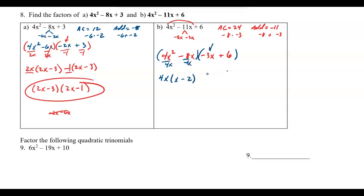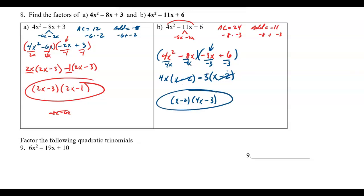For the second group, since it's negative I factor out negative 3, since 3 divides both 3 and 6. Dividing by negative 3: negative 3x gives x, and 6 gives minus 2. Both groups match with x minus 2, so I pull that out. What's left is 4x minus 3, and we are done.